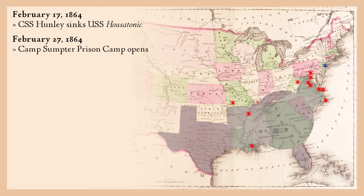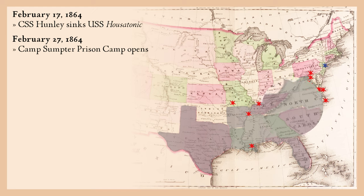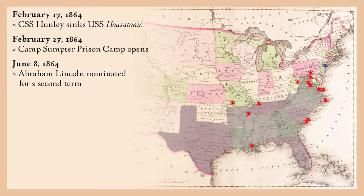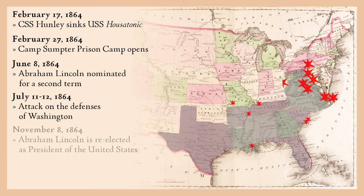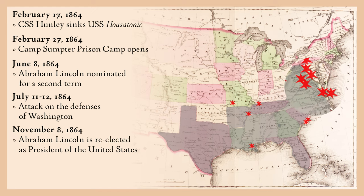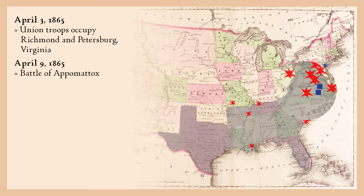February 27, 1864 — Camp Sumter Prison Camp, universally referred to as Andersonville Prison Camp, opens in Georgia; it becomes notorious for overcrowded conditions and a high death rate. June 8, 1864 — Abraham Lincoln is nominated for a second term. July 11–12 — attack of the defenses of Washington. November 8, 1864 — Abraham Lincoln is re-elected president. April 3, 1865 — Union troops occupy Richmond and Petersburg, Virginia. April 9, 1865 — the Battle of Appomattox Courthouse; after an attempt to break through Union forces, Lee seeks an audience with General Grant to discuss terms. That afternoon, in the parlor of Wilmer McLean, Lee signs the document of surrender. On April 12, the Army of Northern Virginia formally surrenders and is disbanded.